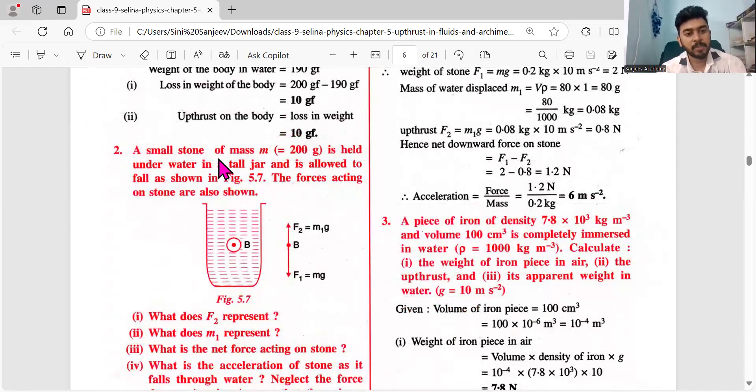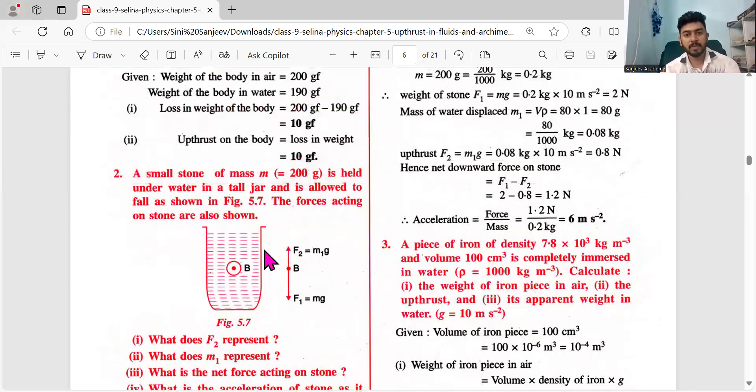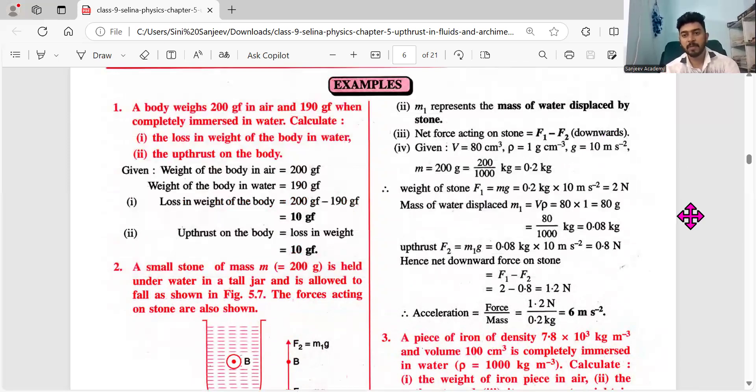Next one, a small stone of mass m is held underwater in a tall jar and is allowed to fall as shown in the figure. The forces acting on the stone are shown. Force is always dependent on acceleration and we know the formula F = ma or mg. What does this force F2 represent? It's going upward, so Uptrust. M1 is the mass of the water displaced by the stone - mass of the body. Body here is basically the stone.